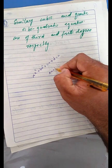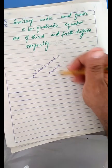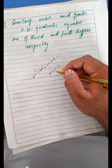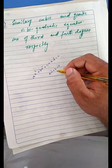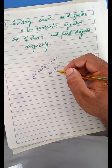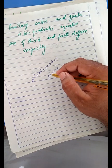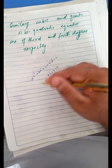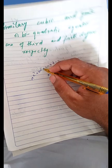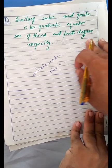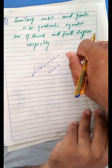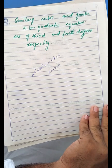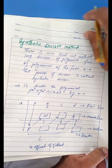An important thing to remember is that the number of solutions of an equation equals its degree. If the highest power is 1, there will be one root. If the highest power is 2, there will be two roots. If the power is 3, there will be three roots. So the number of roots equals the degree of the equation.